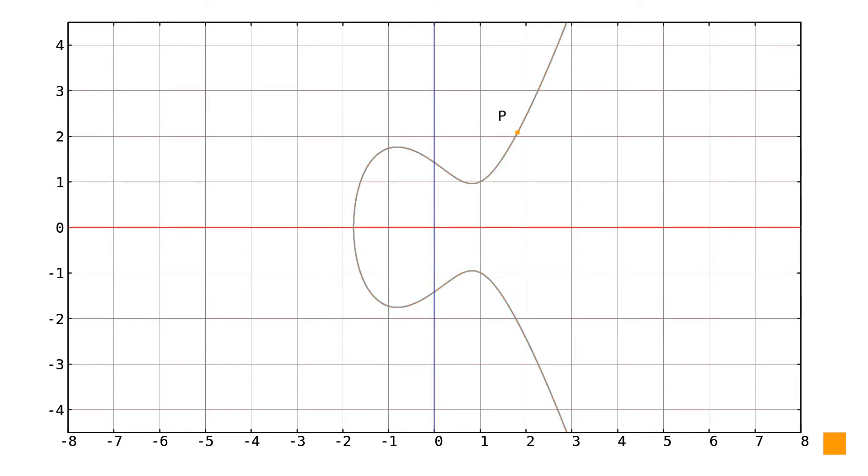For any chosen point P on the elliptic curve we flip it across the x-axis and the resulting point minus P is a negation of the original point. We can accomplish this by negating the y-coordinate.